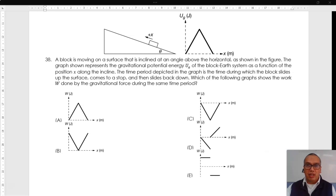38. A block is moving on a surface that is inclined at an angle above the horizontal, as shown in the figure. The graph shown represents the gravitational potential energy of the block Earth system as a function of the position along the incline.